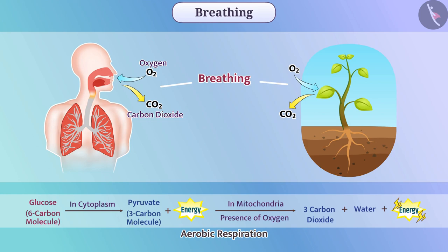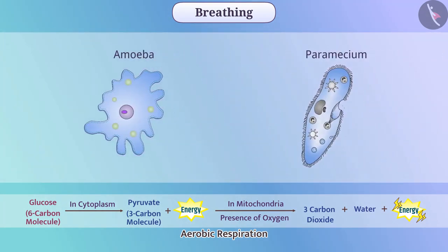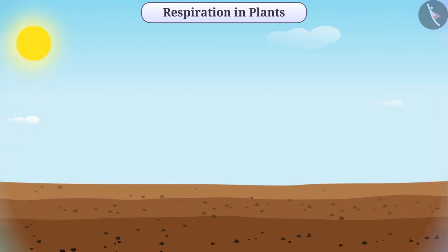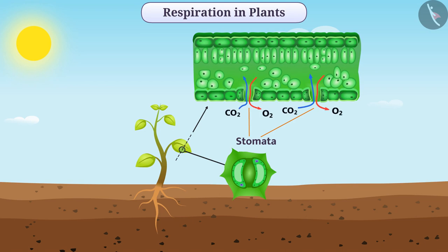Different methods of respiration can be seen in different organisms. In unicellular organisms, gases are exchanged by diffusion. In plants, exchange of gases takes place through stomata. There is intercellular space in between the cells, due to which cells are in contact with air, and they exchange carbon dioxide and oxygen by diffusion.